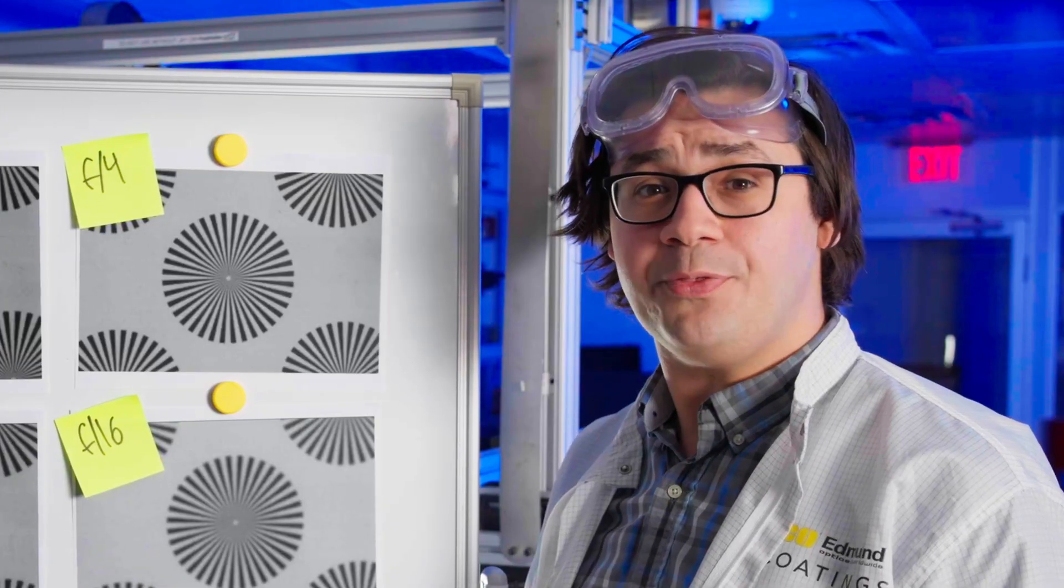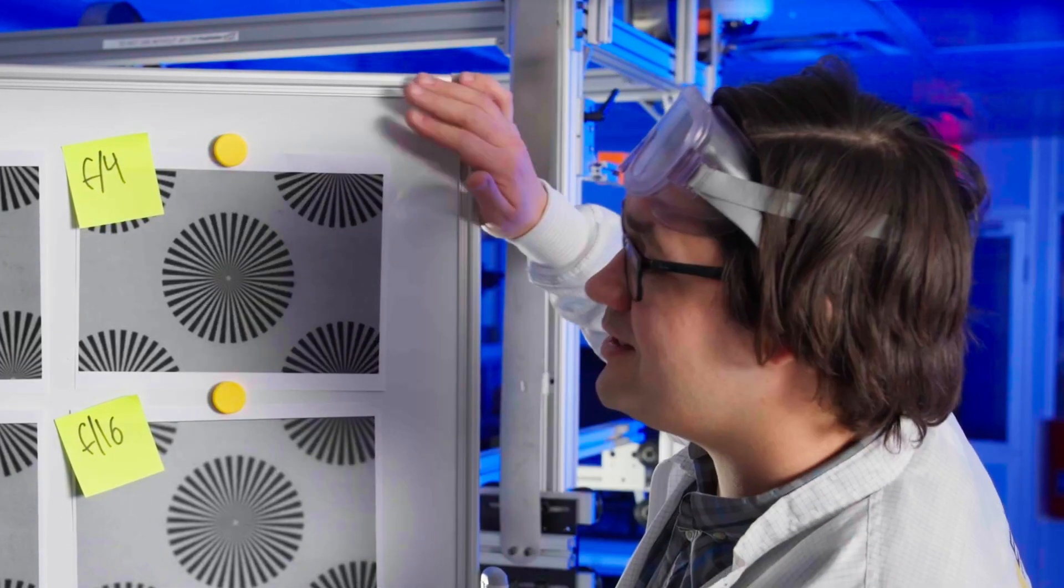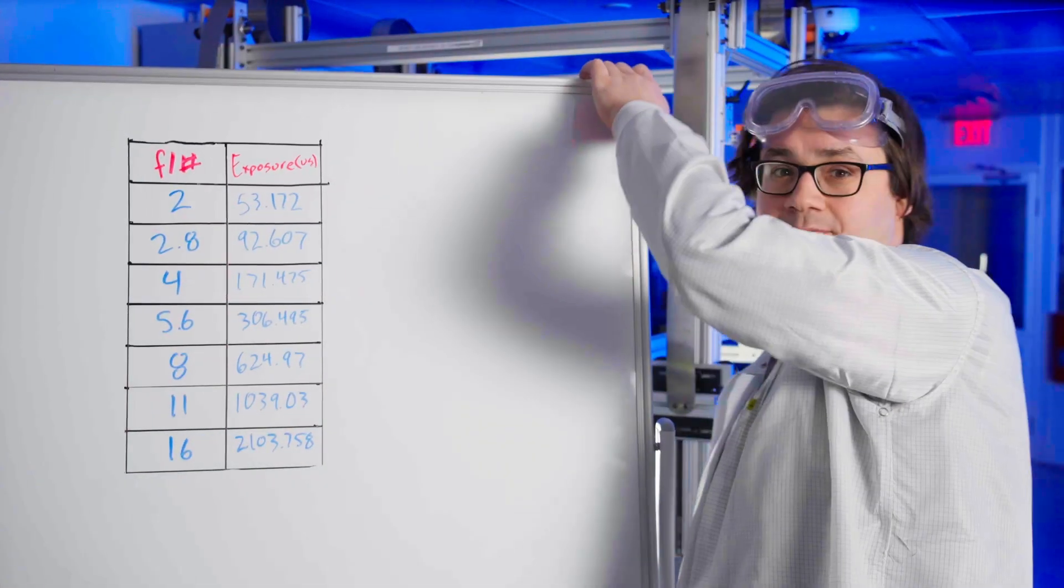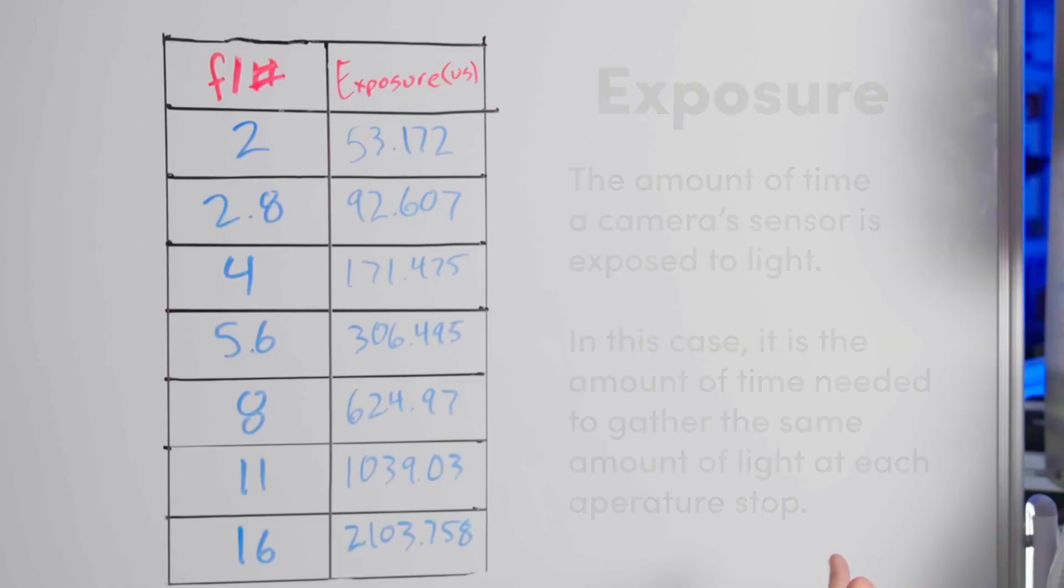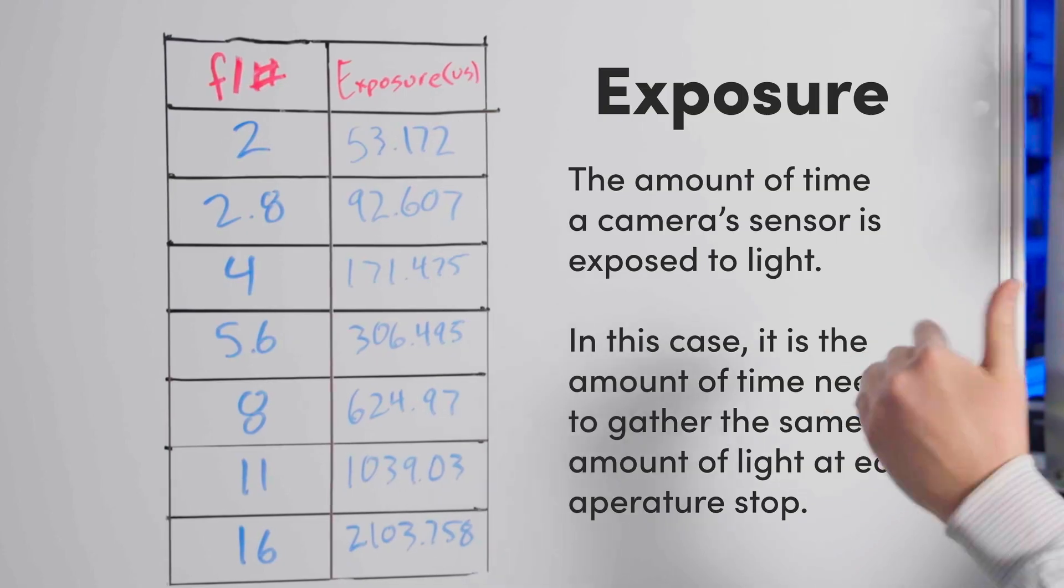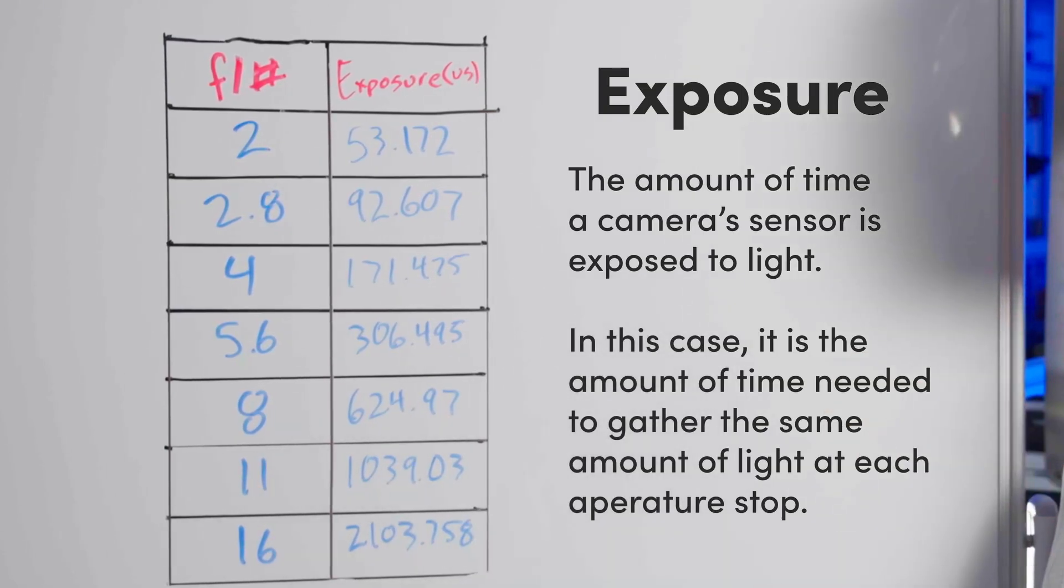But Chris, what about our light throughput? Way ahead of you, cadets. I've already collected the exposure values for each aperture stop. Remember, since each stop halves our light, the time needed to acquire the image must double.